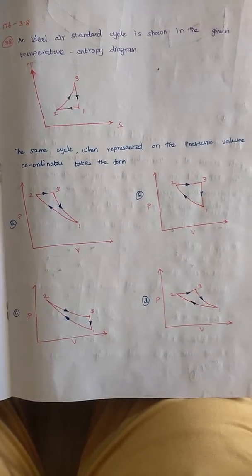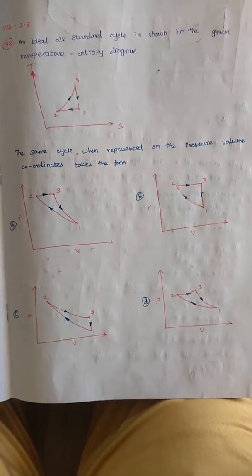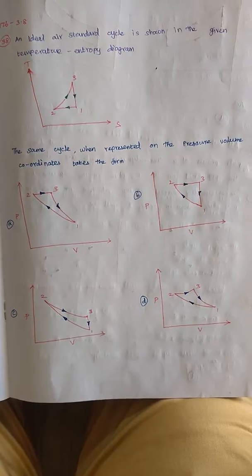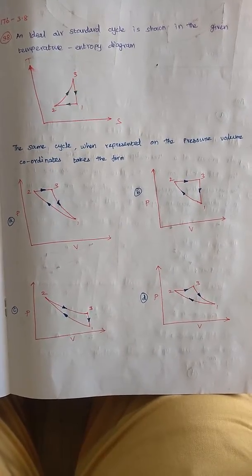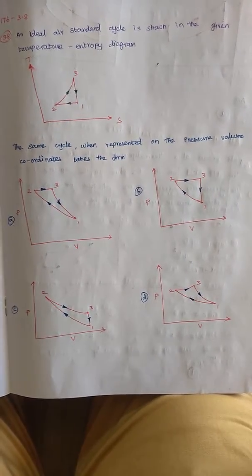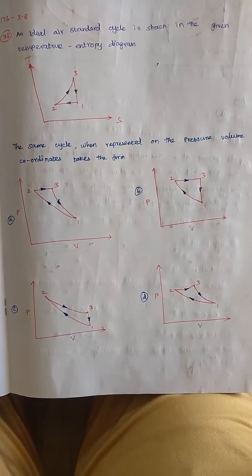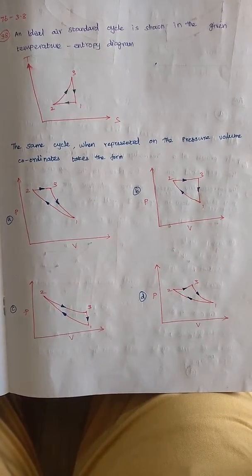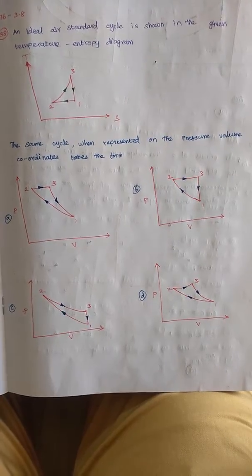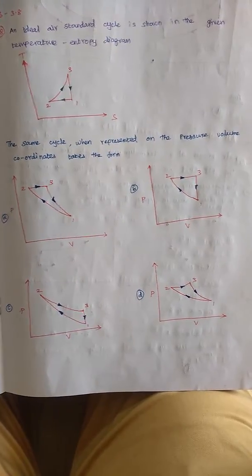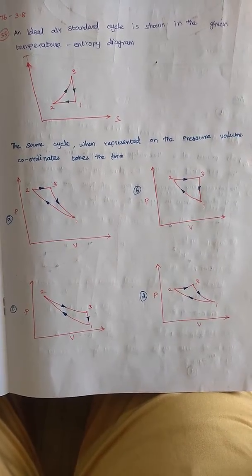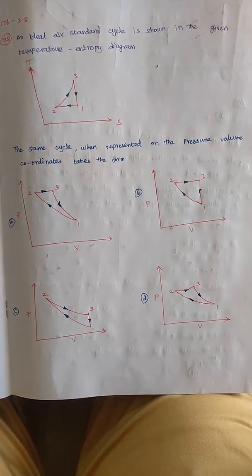The given question is an air standard cycle is shown in the given temperature entropy diagram. They have given a diagram. Then the same cycle when represented on the pressure volume coordinates. They have given four diagrams. So before seeing this one,